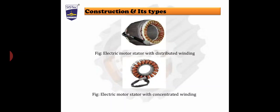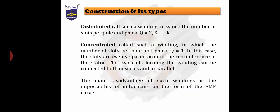This is the stator with the distributed winding — you can see the diagram of the electrical motor stator with the concentrated winding. Distributed winding is defined as winding in which the number of slots per phase, Q, is equal to 2, 3, and so on. Concentrated winding is defined as winding in which the number of slots per phase Q is equal to 1. In this case the slots are evenly spaced around the circumference of the stator.